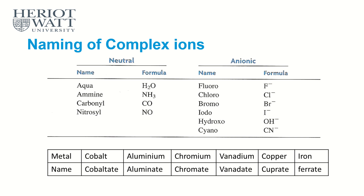Let's continue with the naming of complex ions. How do we name a complex ion? From the previous video, we learned what a complex ion is, or what a transition metal complex is. A transition metal complex is a combination of a metal ion with ligands. Ligands can be more than one, and we know that ligands can have different types.